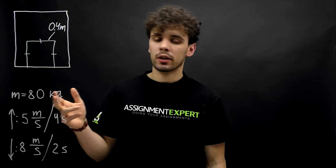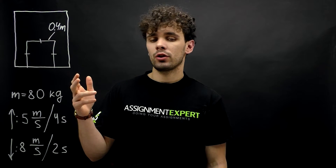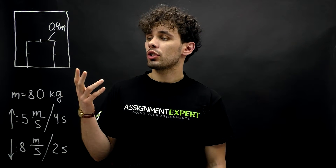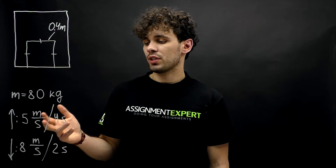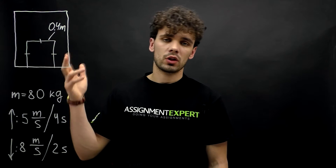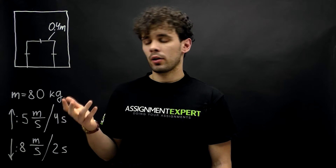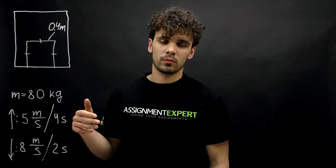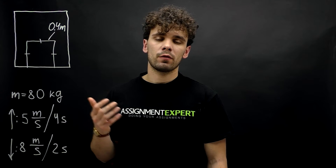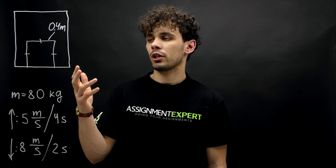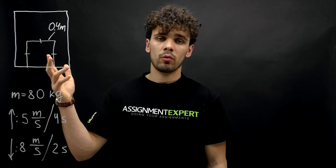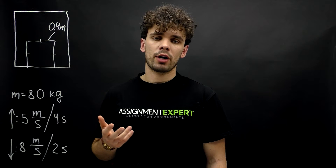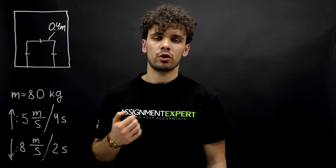The cube weighs 80 kilograms, and the elevator moves up and down repeatedly. The elevator can reach a speed of 5 meters per second in 4 seconds when going up, while it can reach 8 meters per second in 2 seconds when going down. Our task is to find the pressure experienced by the elevator floor caused by this cube when the elevator moves up, moves down, and when it moves in any direction at a constant speed of 1 meter per second.